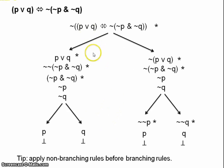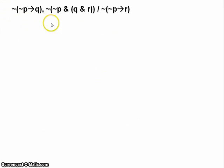Right then. Now I want to have a look at a tree for an invalid argument. Let's take this argument here, rather more complex than what we've seen before. Okay, so first of all we list the premises and the negation of the conclusion.